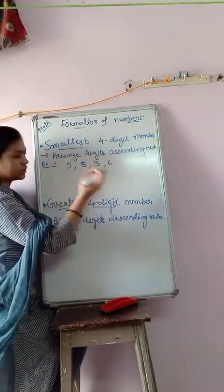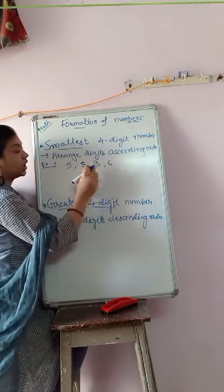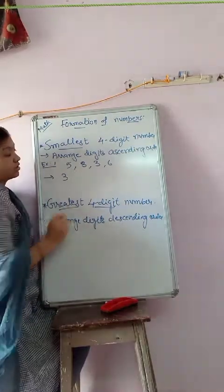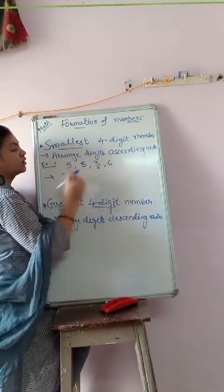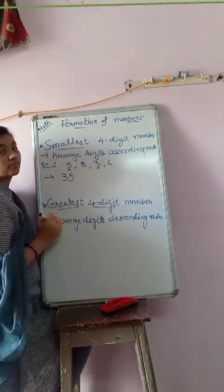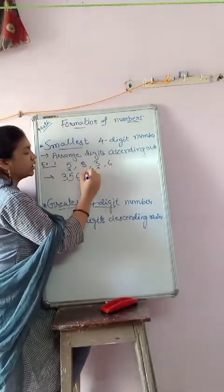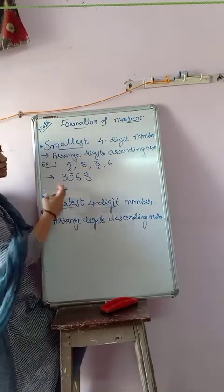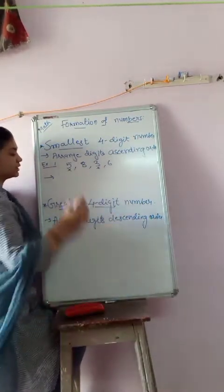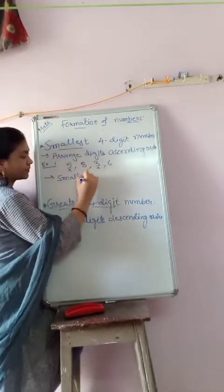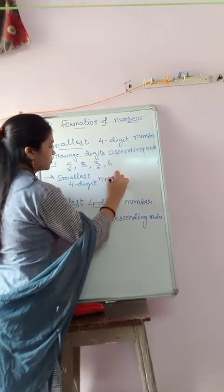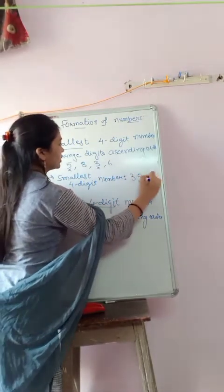From 5, 8, 3, 6 — 3 is the smallest, so 3 comes first. Then from 5, 8, and 6 — 5 is the smallest. Then from 8 and 6 — 6 is smaller and 8 is the largest. So the smallest four-digit number is 3568.